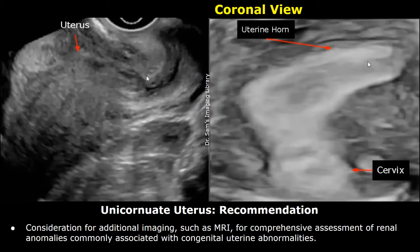Recommendation: consideration for additional imaging such as MRI for comprehensive assessment of renal anomalies, which are commonly associated with congenital uterine abnormalities.